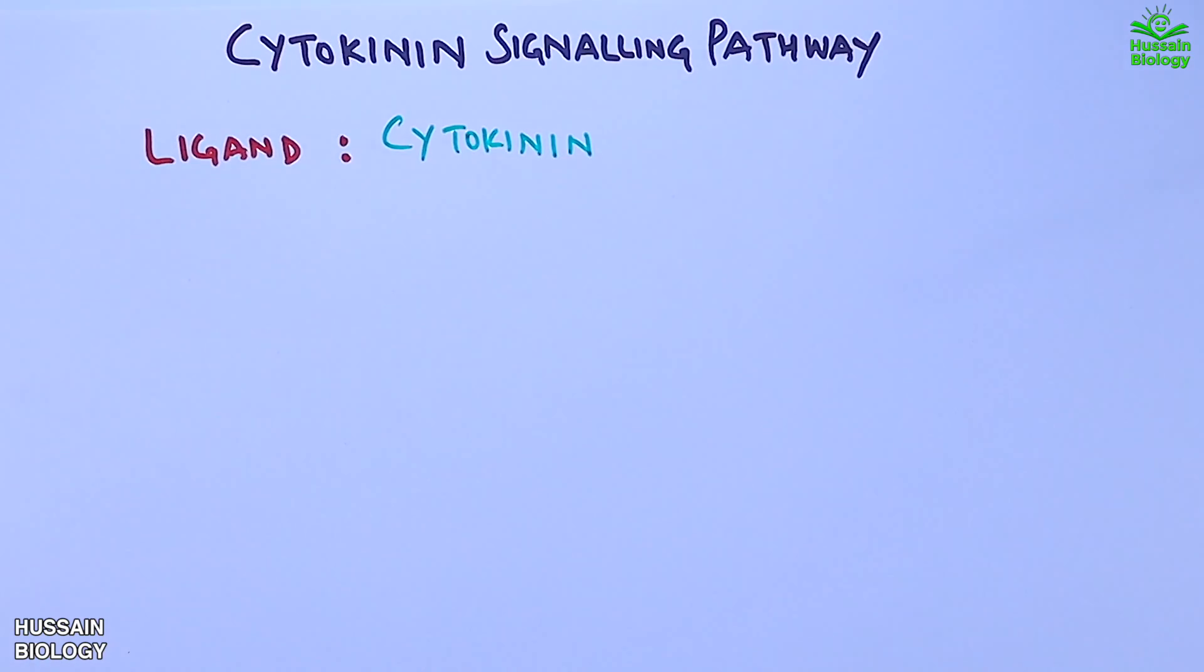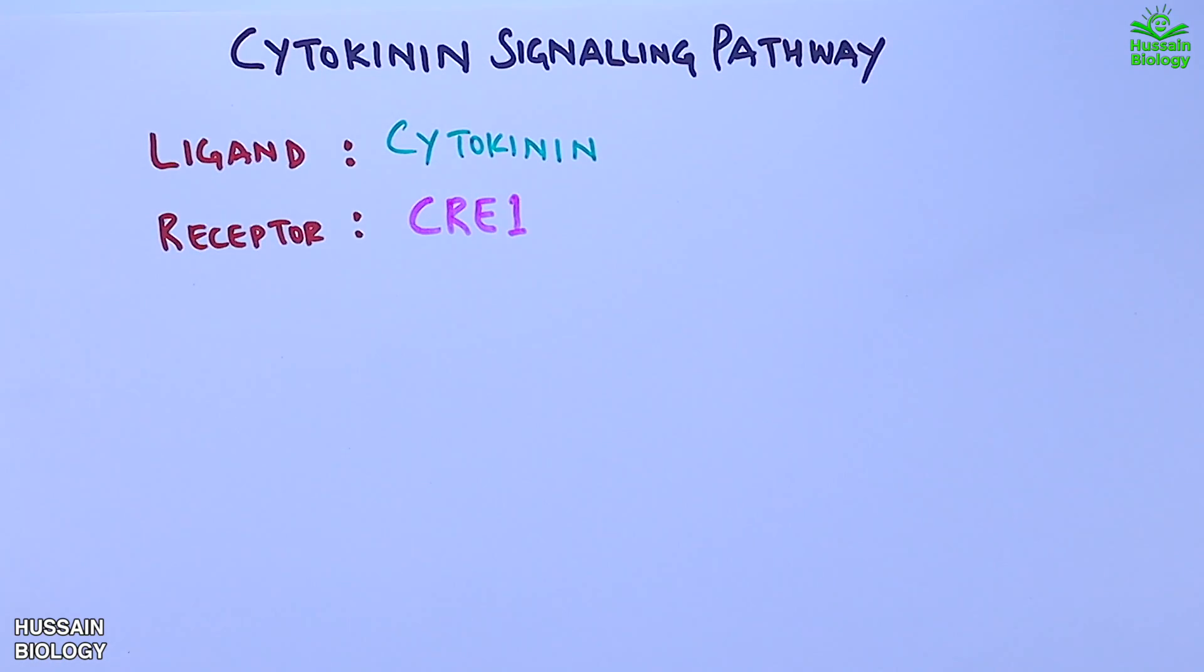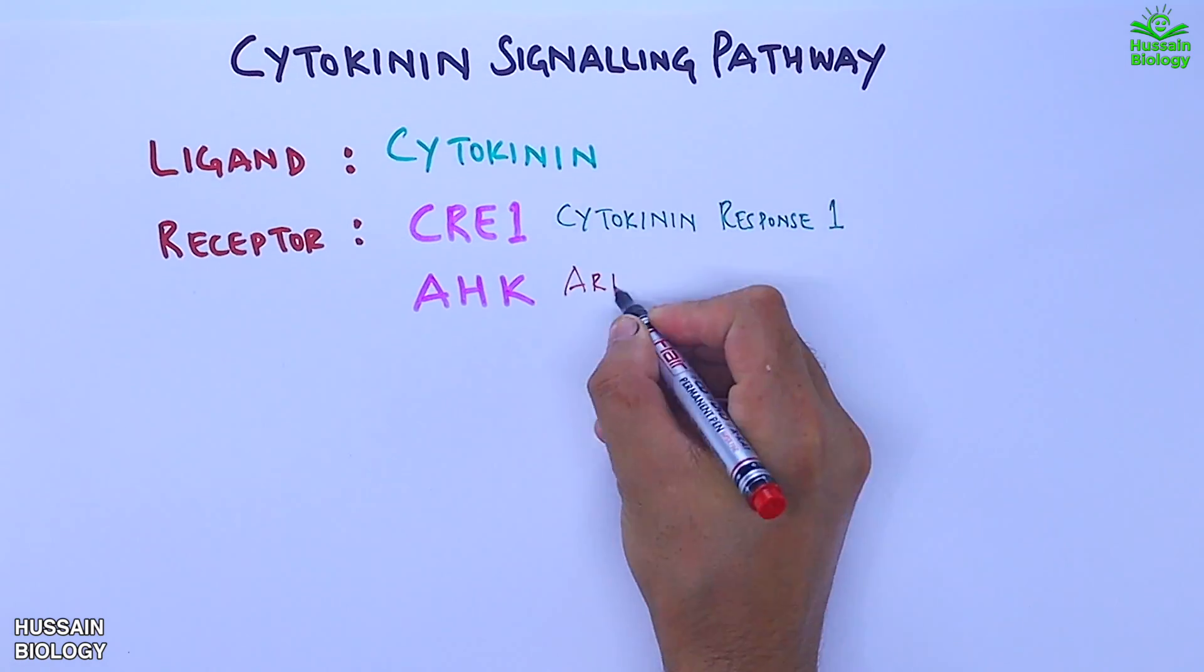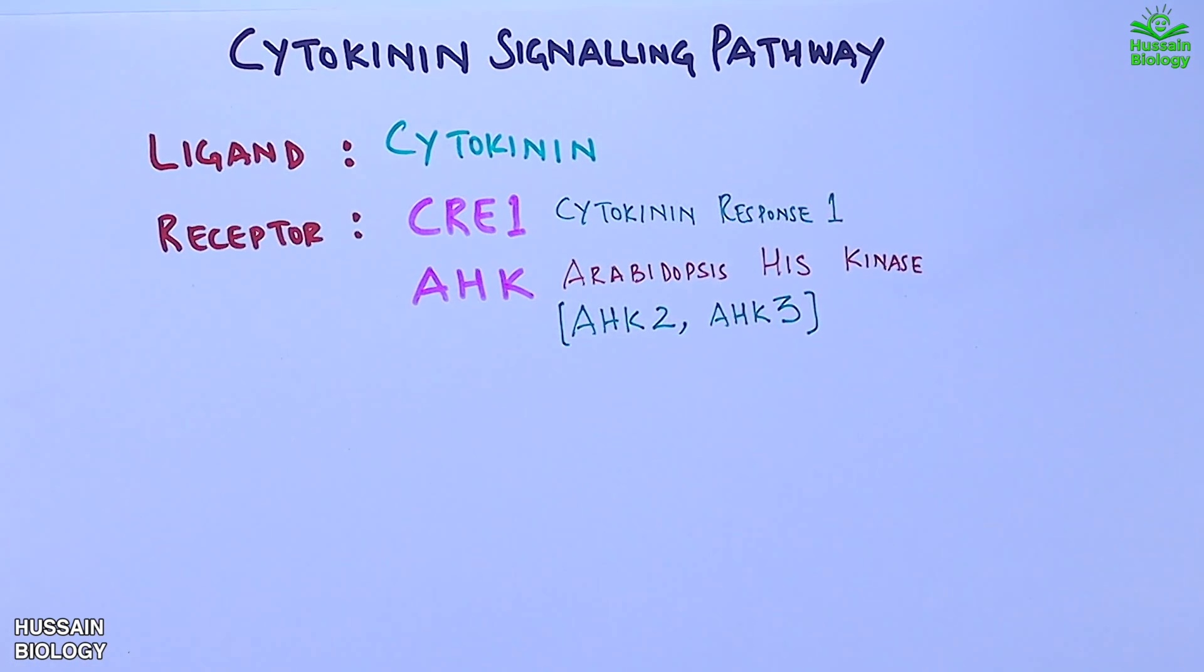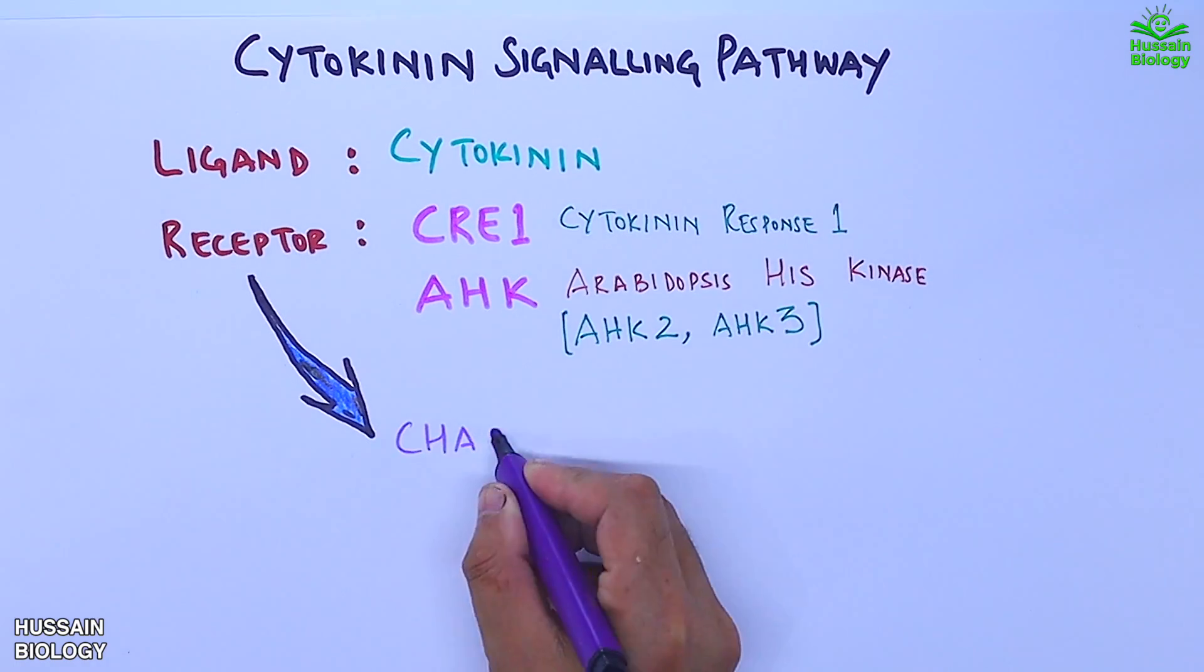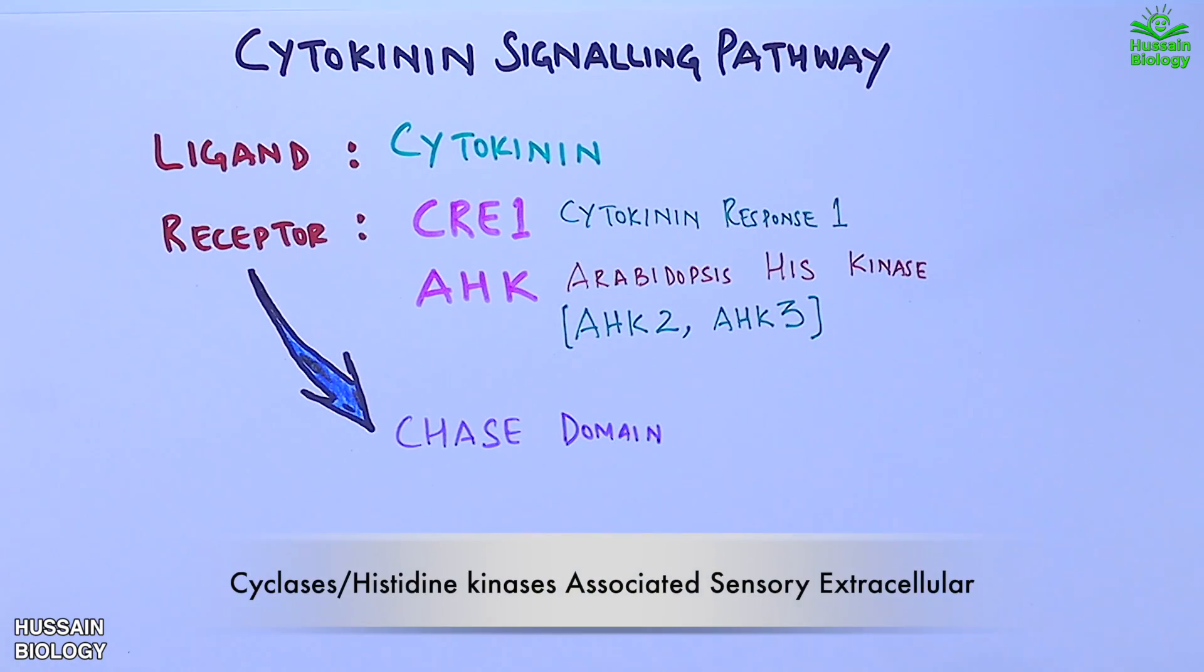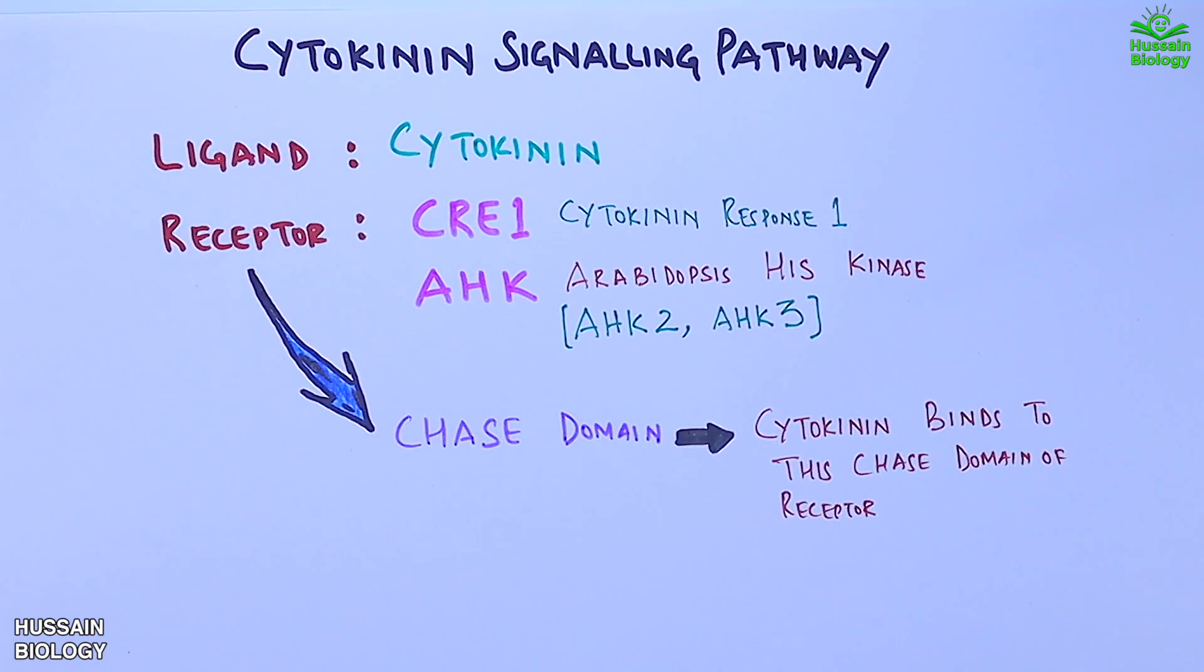In this pathway, the ligand that initiates the signaling pathway is cytokinin, and the receptor for this ligand is CRE1, that's cytokinin response one. We also have receptor AHK, that's Arabidopsis histidine kinase, in the form of AHK2 and AHK3. These receptors, be it CRE1 or AHK, have the chase domain and it's the cytokinin that binds to this chase domain.